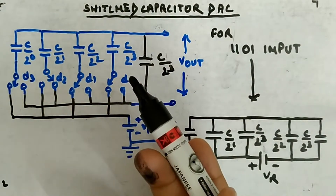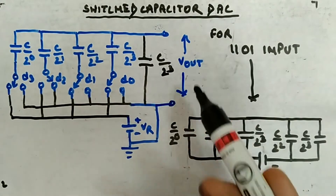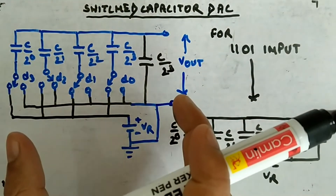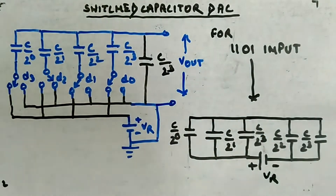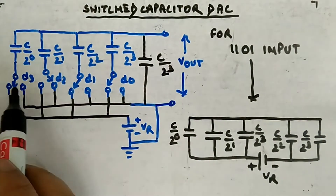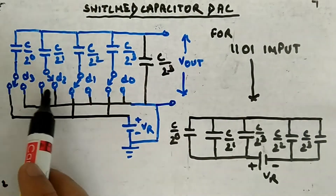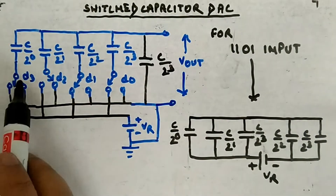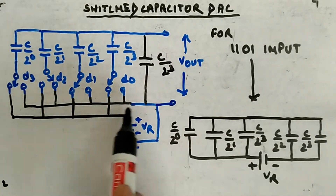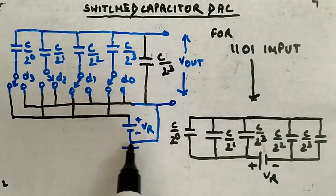Whenever you want to calculate Vout, this sum of 2C will be helpful for calculating Vout for any binary input. From here you are giving the binary input: if you give 1, it will be connected to Vr; if you give 0, it will be connected to ground.